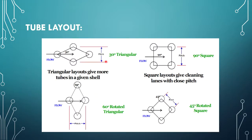These are the tube layouts of the shell and tube heat exchanger. There are mainly two types of tube layout normally used: triangular type and square type. Both layouts have their own advantages and disadvantages. There are also rotated variants: a 60-degree rotated triangular pitch and a 45-degree rotated square pitch.